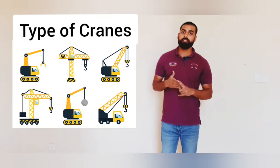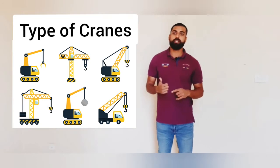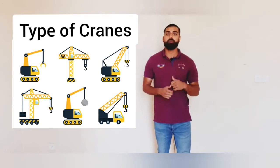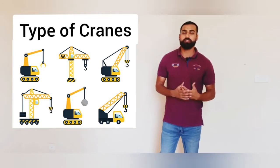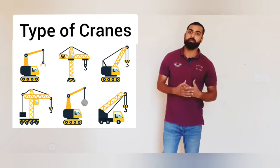Talking about the types of crane, there are six main types: mobile crane, truck-mounted crane, crawler crane, tower crane, overhead crane, and a boom lifting crane, also known as a boom truck. I will put another video regarding these types of cranes and explain in detail the difference between each type.